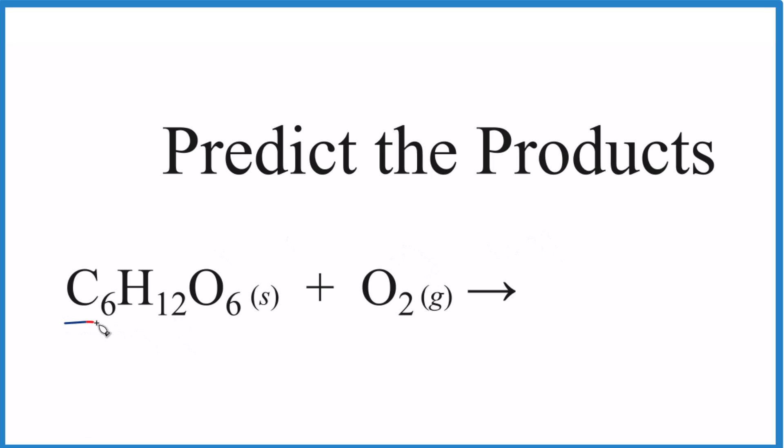In this case, we have carbons and hydrogens, and they're reacting with oxygen gas. There's some oxygen in here too. But when we have carbon and hydrogen reacting with oxygen gas, that's a combustion reaction. It's actually an organic combustion reaction because we have carbon and hydrogen.